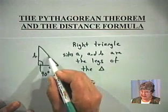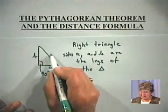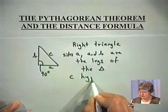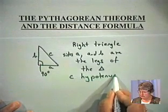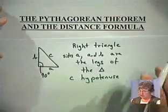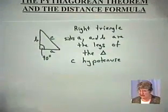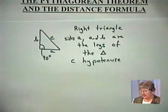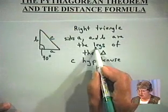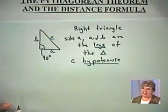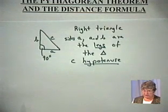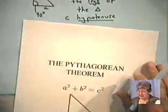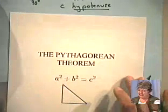The side that is opposite the 90-degree angle is called the hypotenuse. The right triangle has a 90-degree angle; the legs are A and B, and the side opposite the 90-degree angle is called the hypotenuse. You might remember that that is the setup for the Pythagorean Theorem.